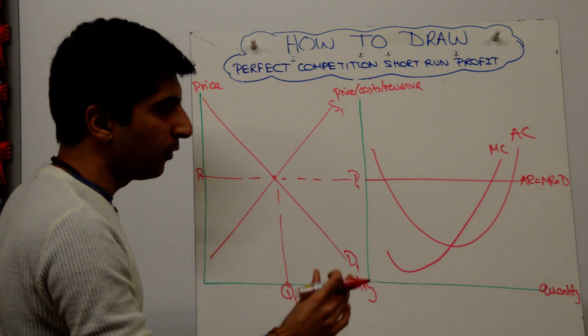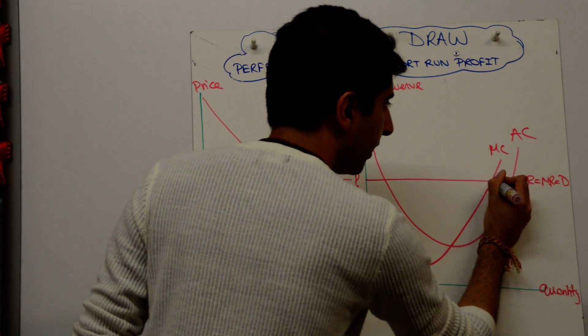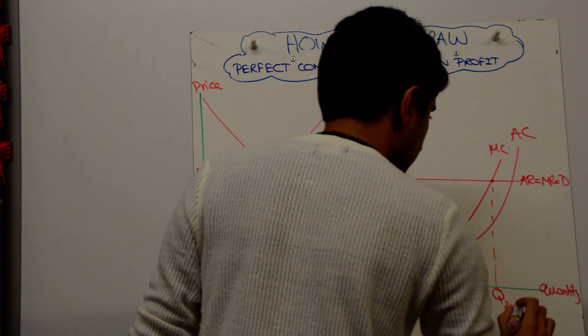Next, we have to show the profit maximizing level of output. That occurs where MC equals MR. That takes us to a quantity of Q2.